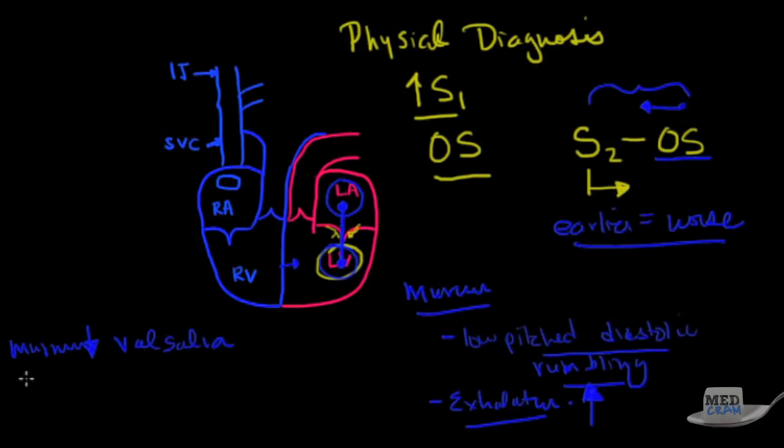Now, what else might you hear? You might hear a P2. Why might you hear a P2? Because if the pressure in here is built up, it's going to back up through the lungs into the pulmonary artery, which is going to make a larger sound than you would normally have. So you're going to have an increased P2. And as a result of that, you may also see, if it's been there for a while, right ventricular hypertrophy because you'll have elevated pulmonary artery pressures.